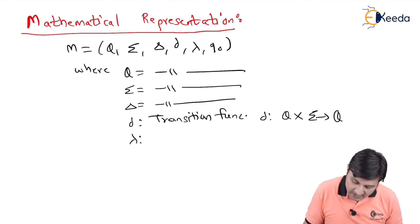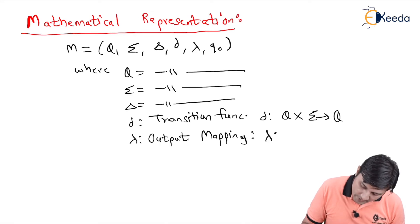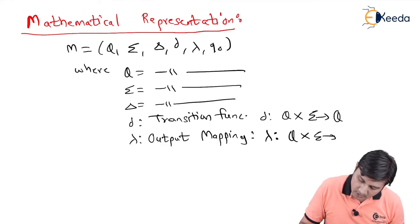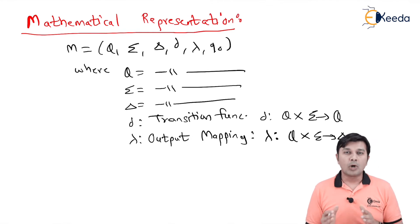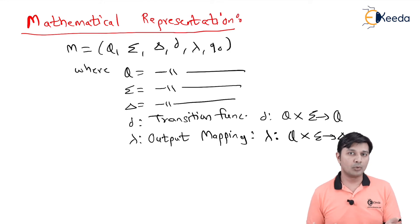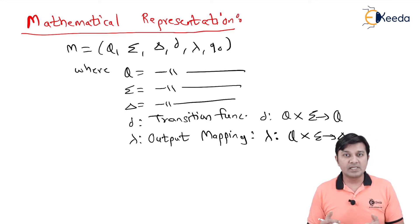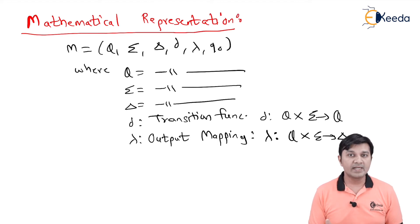The key difference from Moore machine is λ, the output mapping. In Mealy machine, λ is represented as: given a state and an input symbol, what is the output. In Moore machine, Q directly gives Δ. Here, Q says: depending on what input I receive — say input A or input B — I'll give the output. Both outputs may be same or different, so the output is associated with each transition, not each state.